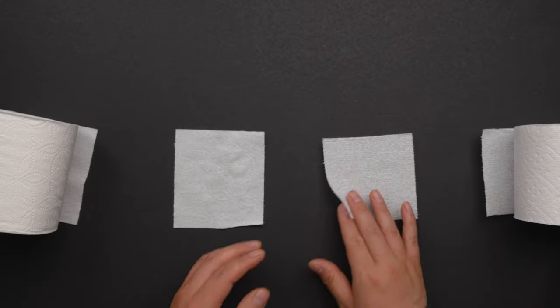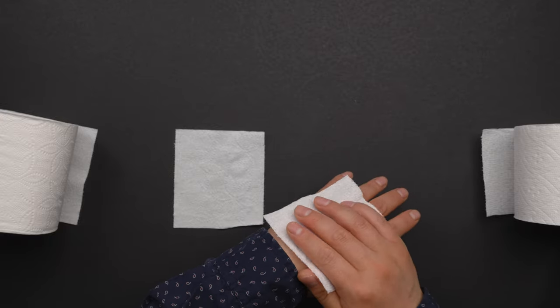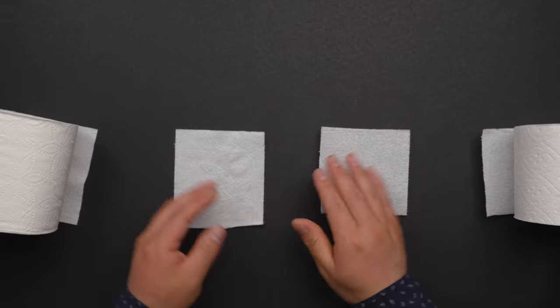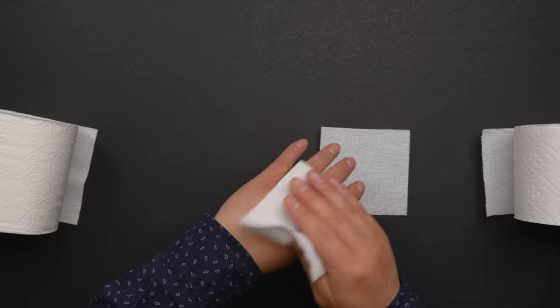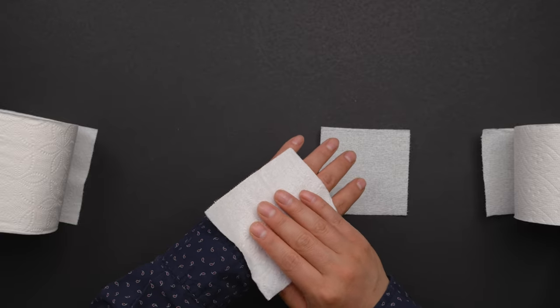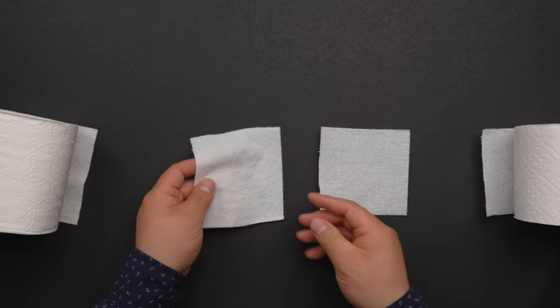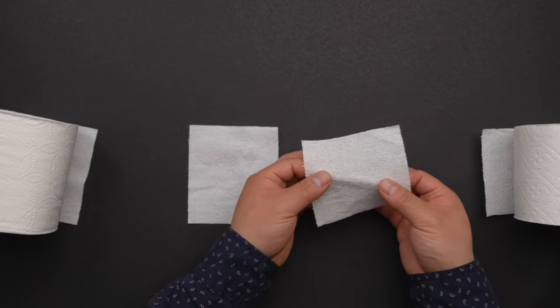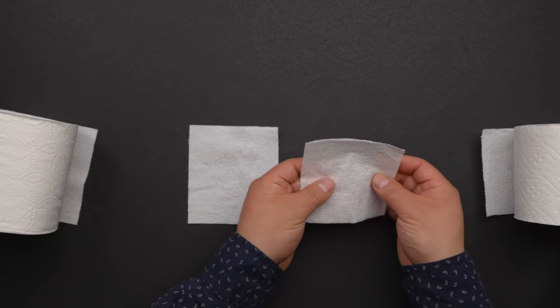So the next thing, let's check how it feels on the skin. This one is soft, it feels like a cloth. It doesn't feel like a paper. For the Costco one, a little bit rough, a little thin. So personally I prefer the Charmin toilet paper. It just feels thicker and softer on the skin.